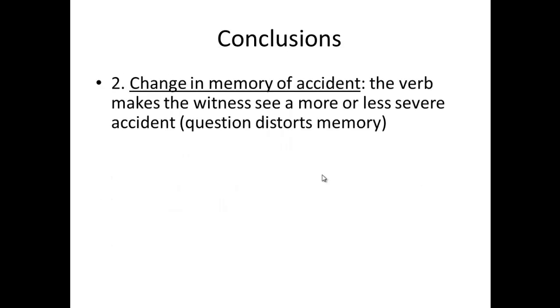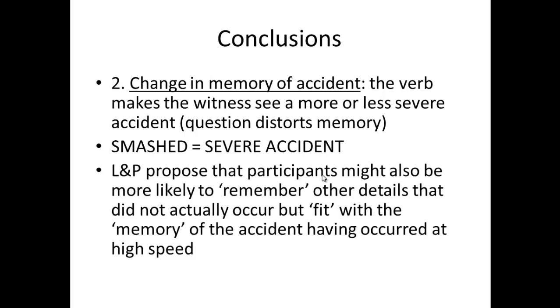The other possible reason why the verb affected the speed estimate is because that differing question, that different verb, has actually changed your memory of the accident. The verb makes a witness see a more or less severe accident in their mind, so it's actually distorting the memory. Loftus and Palmer proposed or thought that if it was changing the memory, if the correct explanation is number two, then participants are more likely to remember other details that didn't occur but fitted with the memory of the accident having occurred at a higher speed. And because of that proposal, they went on to do experiment two.